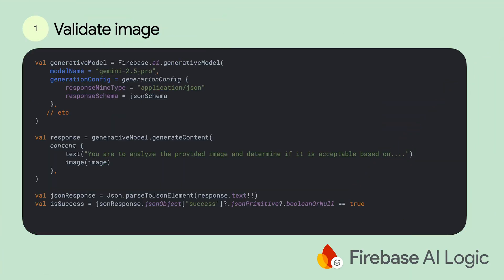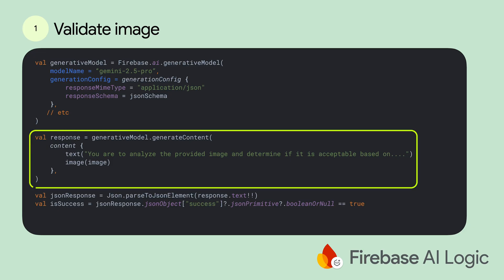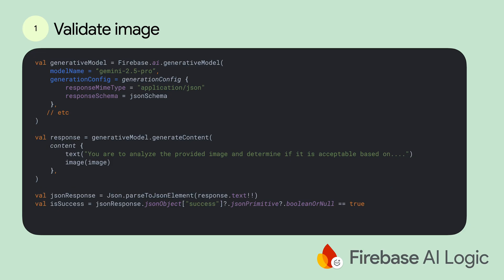So we know the basics — let's talk details. How can we actually integrate with these SDKs? To validate the image, we call Firebase AI Logic. First, we create the generative model. Then we call generate content on the generative model. In this example, we are using multimodal Gemini to pass in the prompt and the image at the same time.